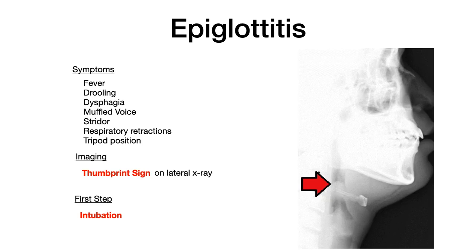Epiglottitis is extremely high-yield on exams because it has very distinct clinical features and a famous imaging finding. Symptoms include fever and drooling — because the inflamed epiglottis prevents normal swallowing — as well as dysphagia and muffled voice, since a hugely inflamed epiglottis prevents normal phonation. You'll also see stridor and respiratory retractions because the inflamed epiglottis prevents moving air as efficiently as before.